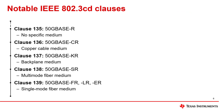Now that we've covered some of the differentiating factors of 50 gigabit Ethernet, let's go over some notable clauses of the IEEE 802.3 CD standard. Clause 135, also known as 50G Base R, generally defines the physical medium attachment sublayer of 50 gig Ethernet without any specific medium. Here, 50G represents the data rate, base stands for baseband signal, and R stands for scrambled coding.